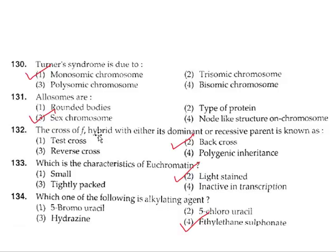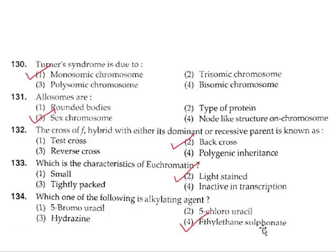Question 132: The cross of an F1 hybrid with either of its dominant or recessive parent is called a back cross. Option 2. Question 133: A characteristic of euchromatin is that it is a coding region and is lightly stained. Correct answer is option 2. Question 134: An alkylating agent among the options is ethylene sulfonate. Option 4.